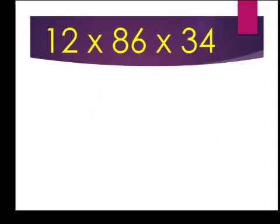In our last example, we have 12 times 86 times 34. We have three numbers that we're multiplying together. Well, boys and girls, you do it the exact same way. You pick easier numbers to multiply in order to get an estimate.